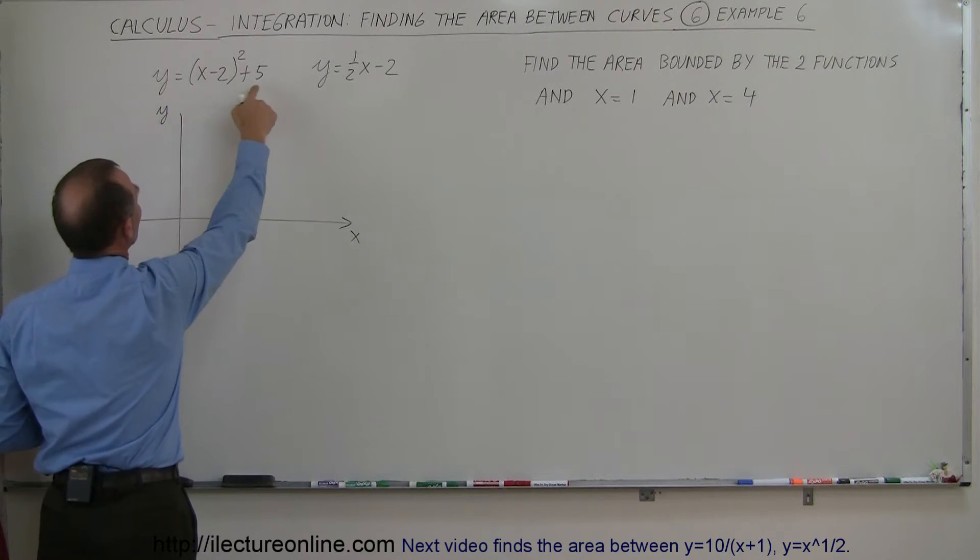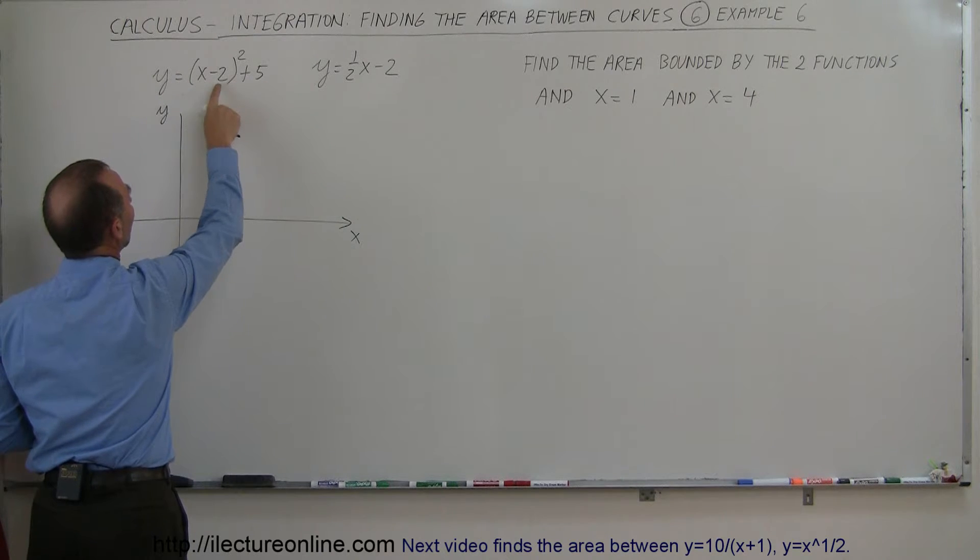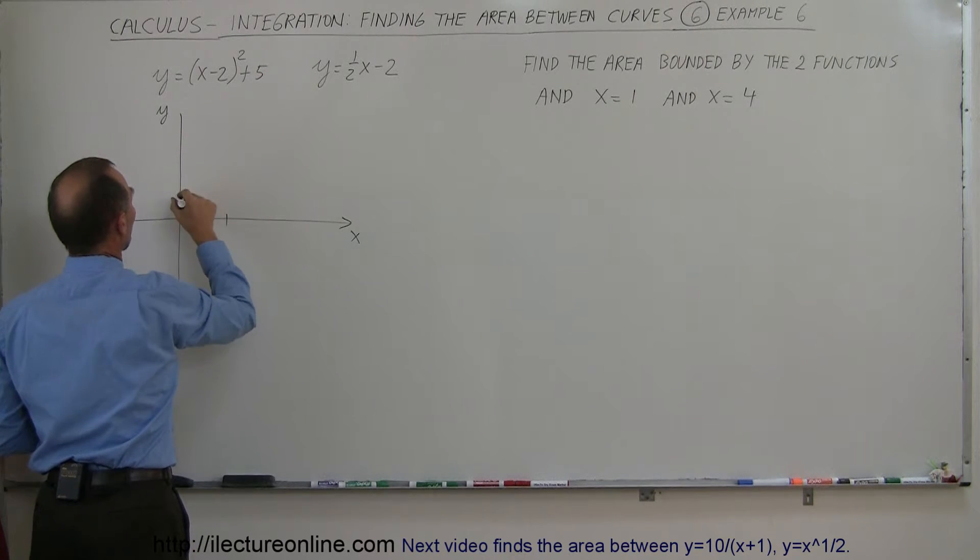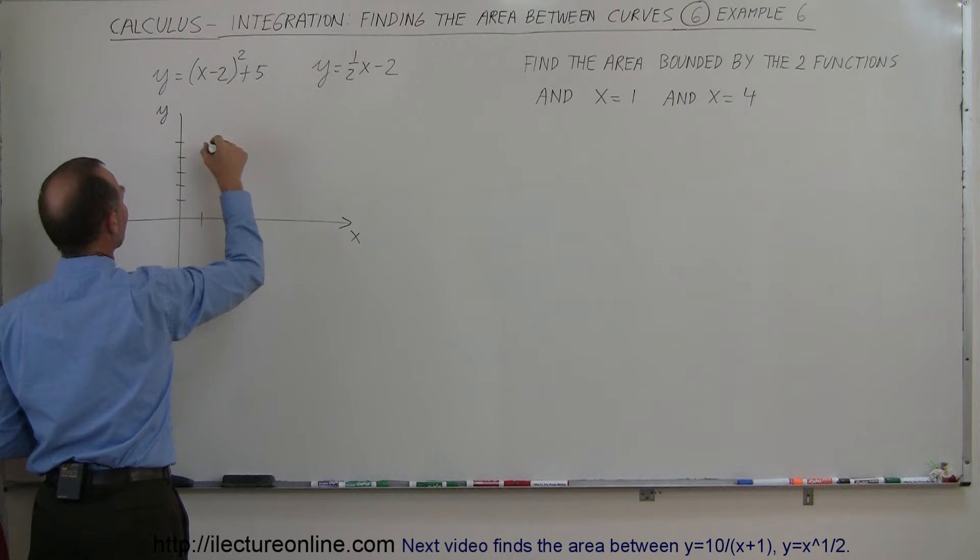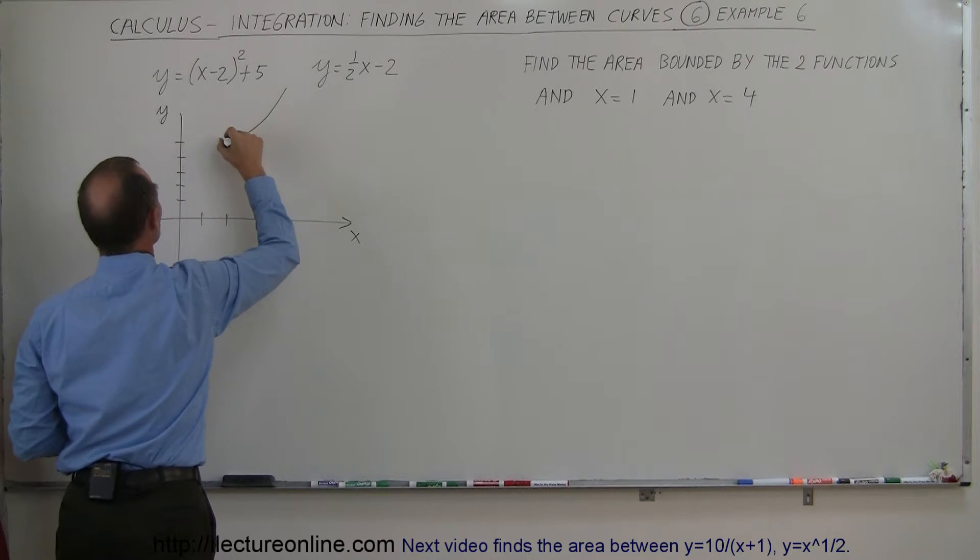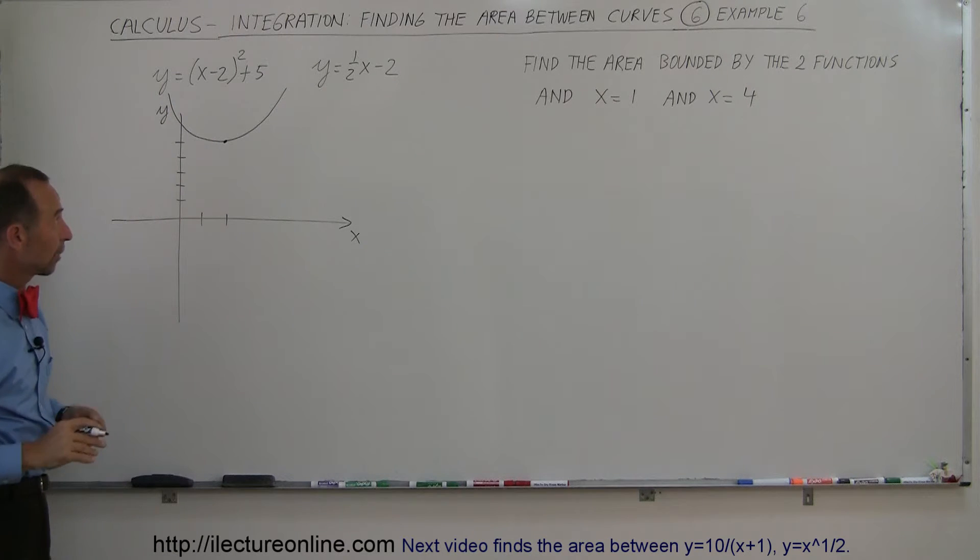This looks like a parabola. It is opening upward because this is positive. It is shifted to the right by 2 and up by 5. So the vertex would be right there and it opens upward. So there's our function y equals the quantity (x minus 2) squared plus 5.